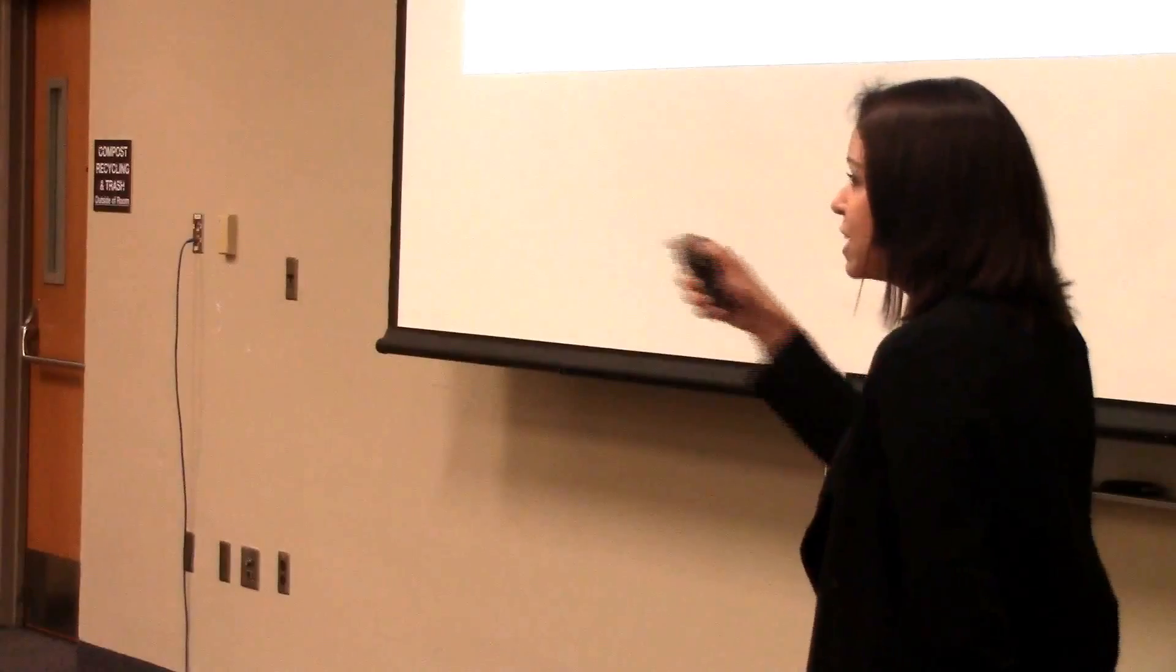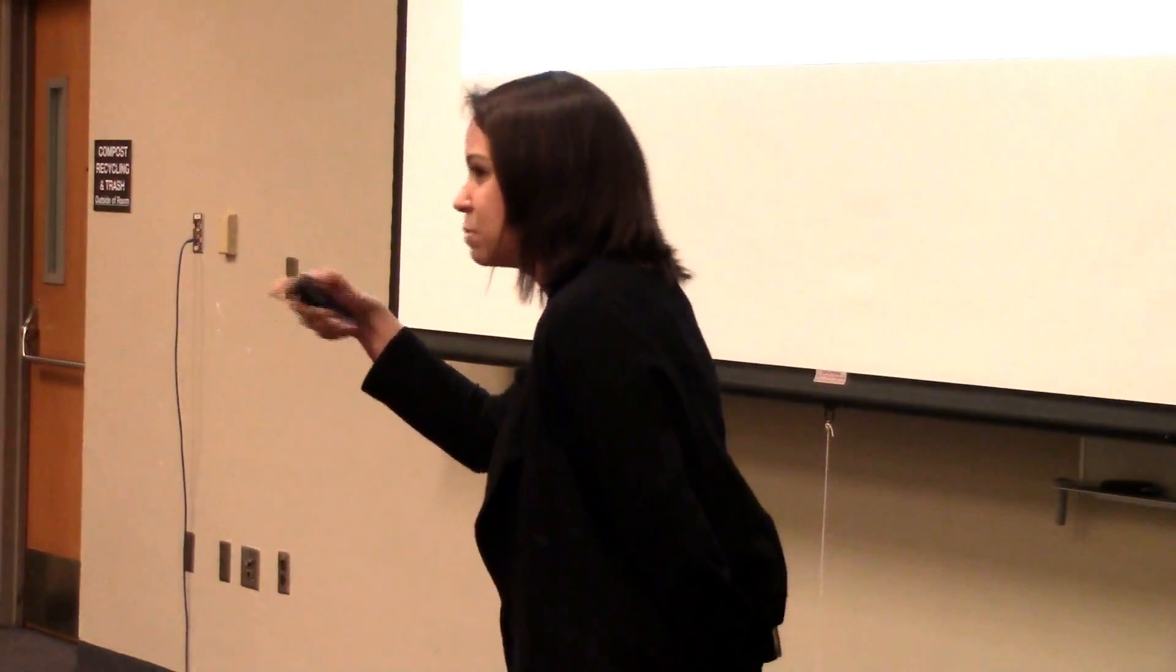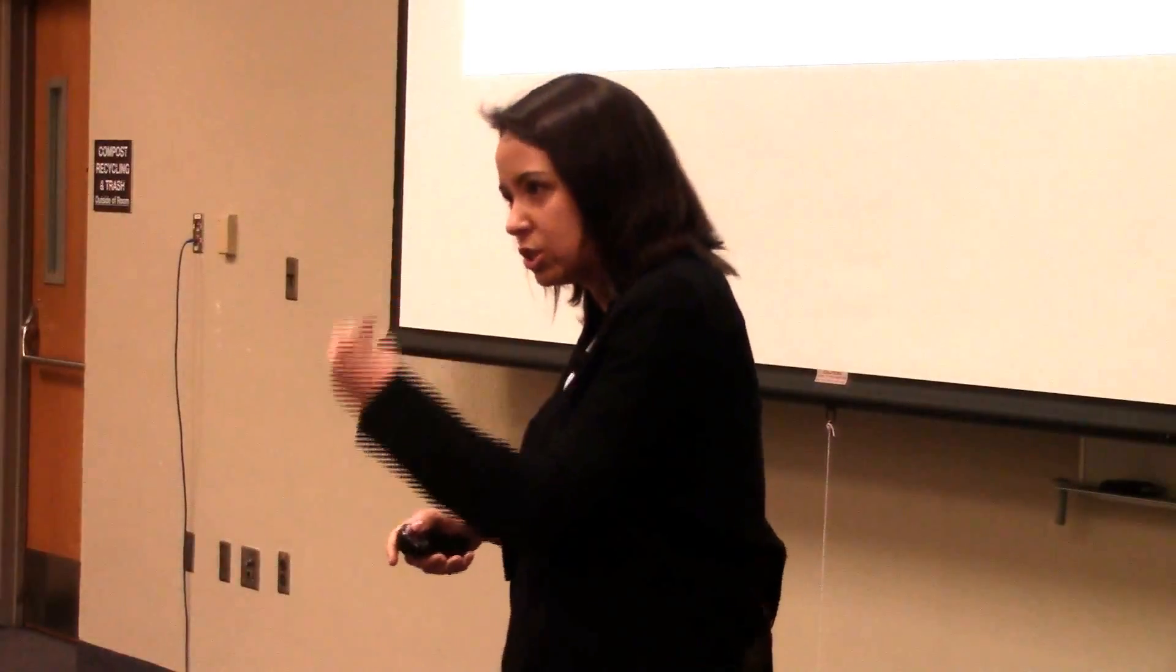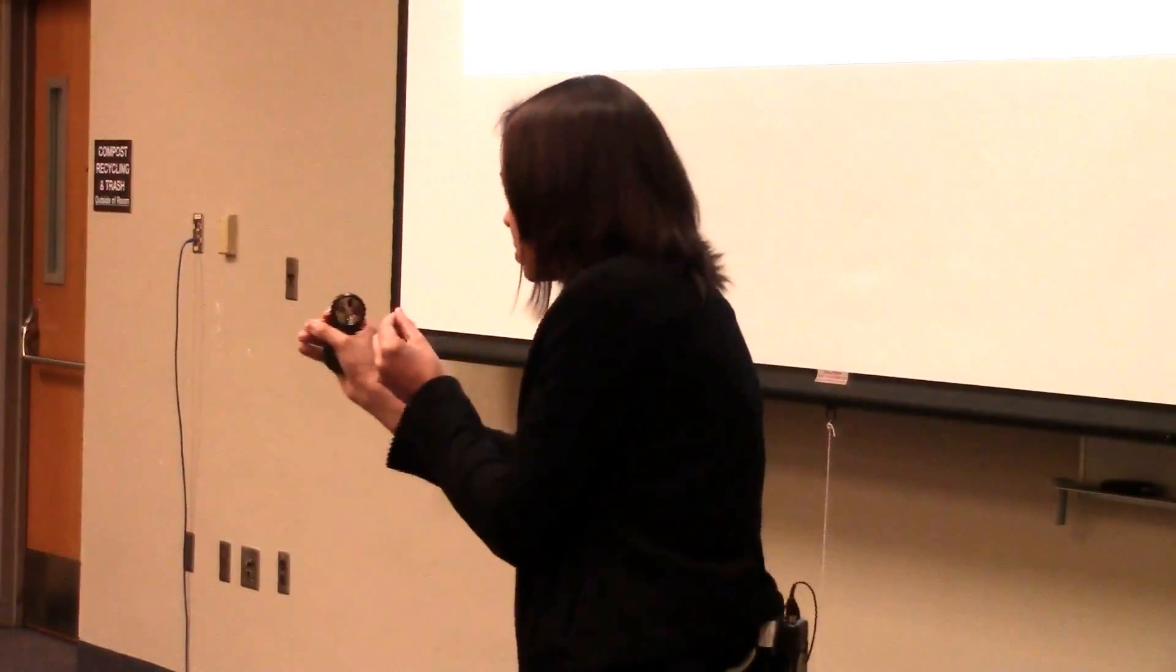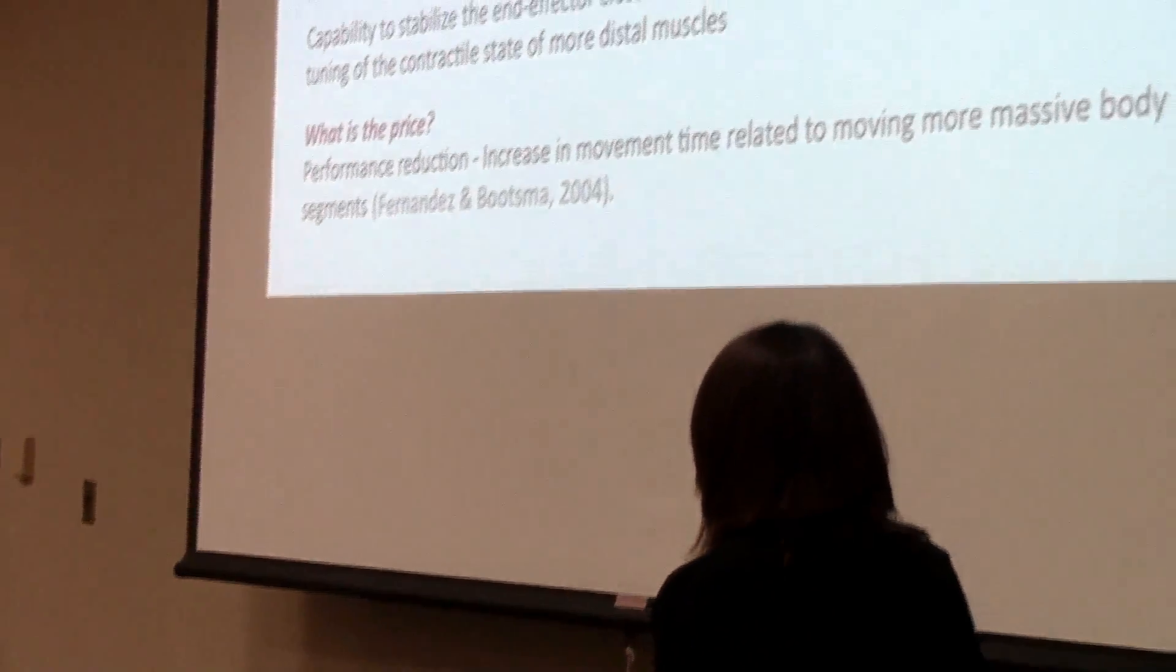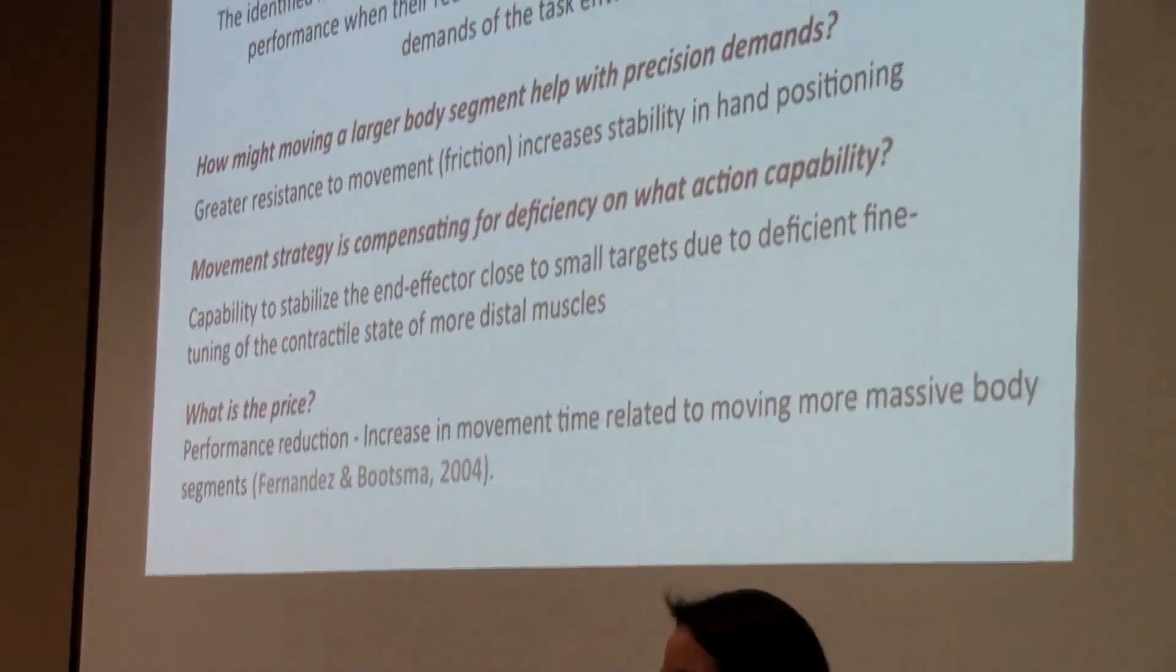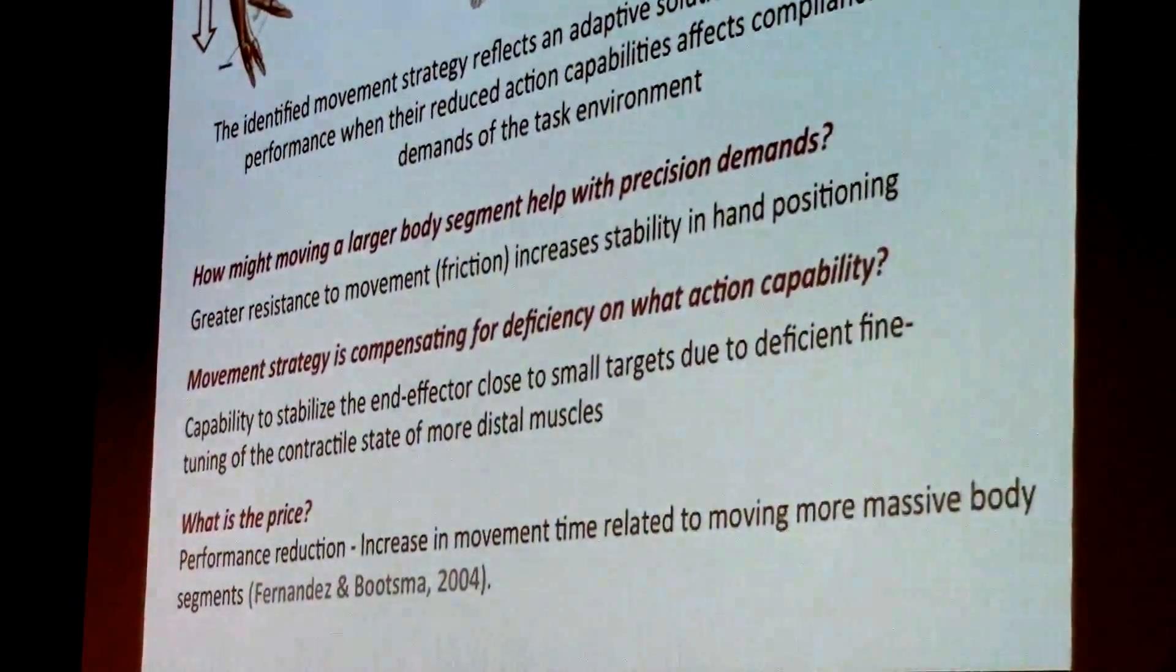And now how this movement strategy might be compensating for reduced action capabilities. What reduced action capability? The capability to stabilize the end effector close to the target, in particular when you're using the smaller distal segments. And why do I think it's harder for the smaller distal segments? Because there is evidence that CP children have difficulty fine-tuning the activation of distal muscles.